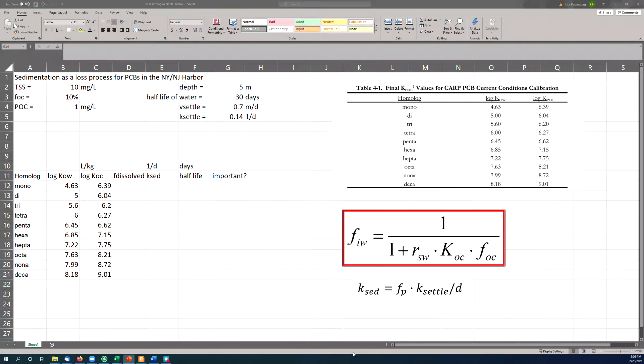And so our example problem has to do with settling velocity of PCBs in the New York, New Jersey harbor. So here's our information about the harbor, its depth. The half-life of water in the harbor is about a month. Settling velocity of the particle is 0.7 meters per day, and it's only 5 meters deep, so it doesn't even take 10 days for the particles to settle out. And the half-life of water is 30 days, so we know that settling is an important process for the removal of the particles. Now the question is, is it an important process for the removal of your chemical?